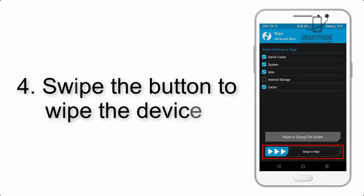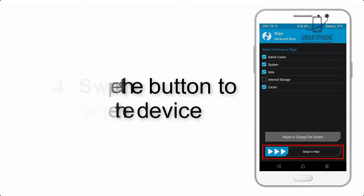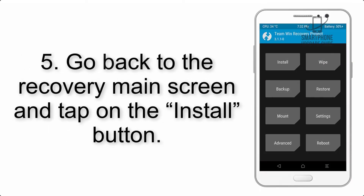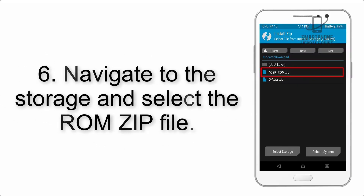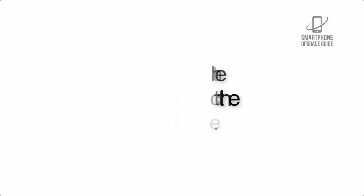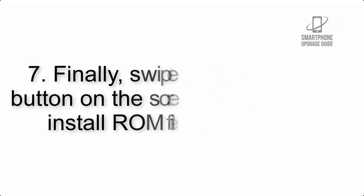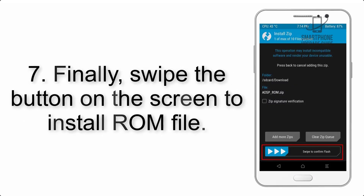Step 4: Swipe the button to wipe the device. Step 5: Go back to the recovery main screen and tap on the Install button.